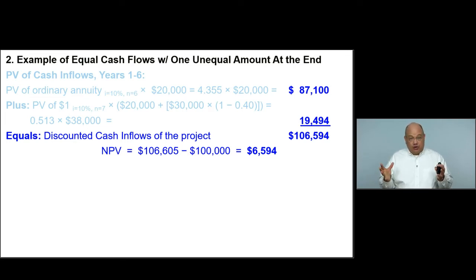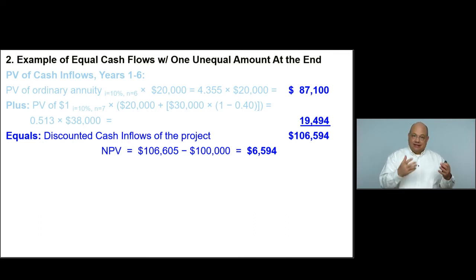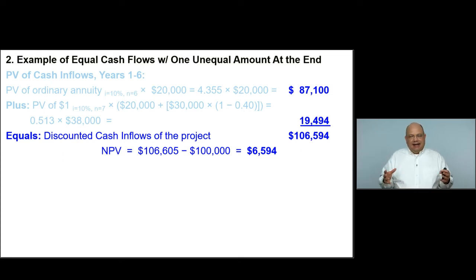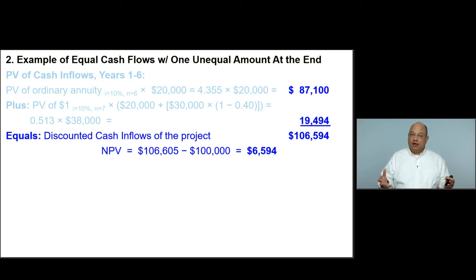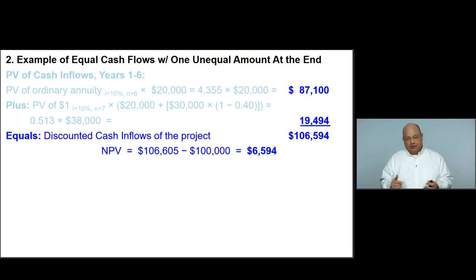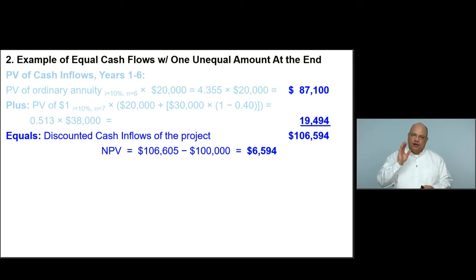There are different ways to do this math. You can do a seven-year annuity at $20,000 and a single lump sum of $18,000 at year seven, or a six-year annuity and one individual cash flow in the seventh year combining both the $20,000 and $18,000. If cash flows are the same every year, that's an annuity — use the annuity table. If cash flows differ each year, you can't use the annuity table; you must use the present value of $1 and calculate each year individually.